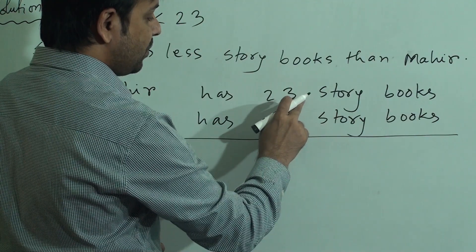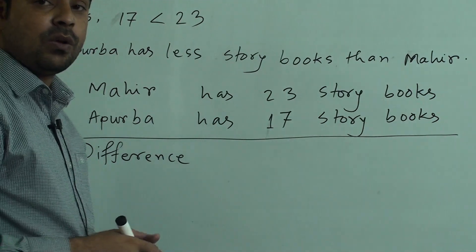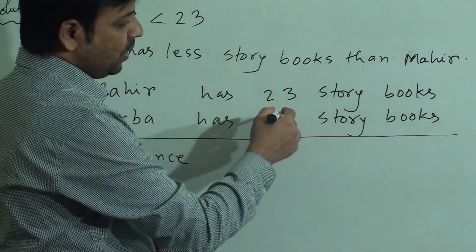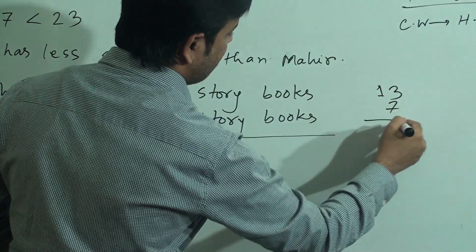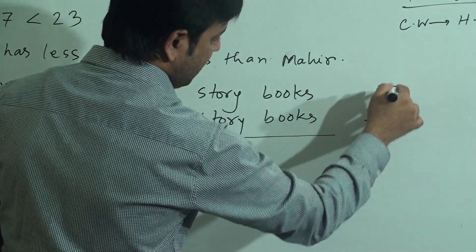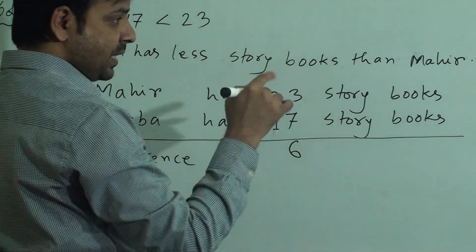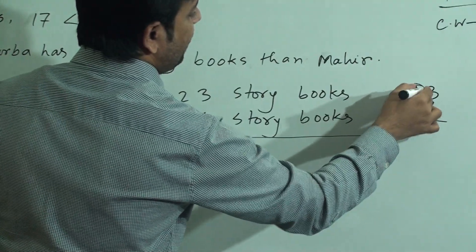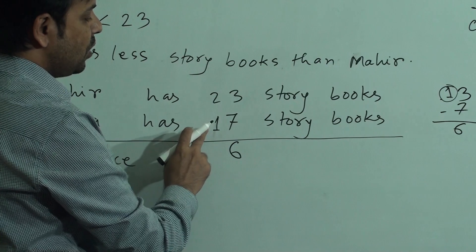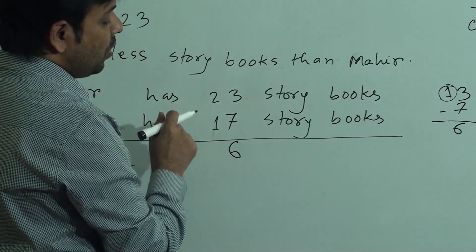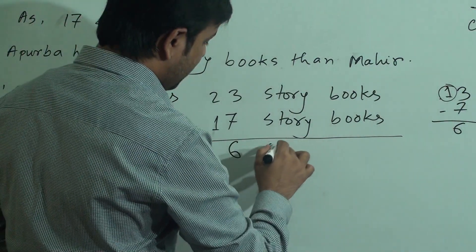We need to subtract 7 from 3, but 3 is less than 7, so we can't subtract directly. We have to borrow 1 with 3, making it 13. Subtract 7 from 13, we get 6. As we borrowed 1, the tens digit 2 becomes 2 minus 2, which is 0 — no need to write 0. So the answer is 6 story books.